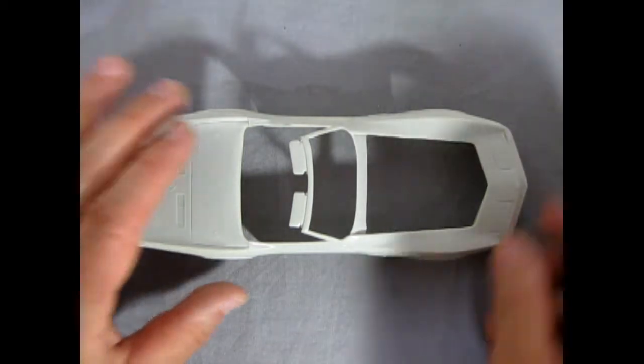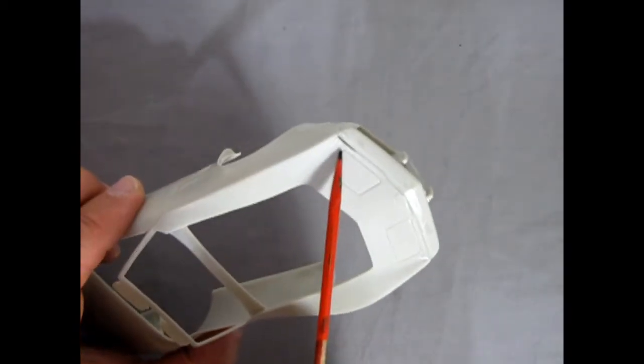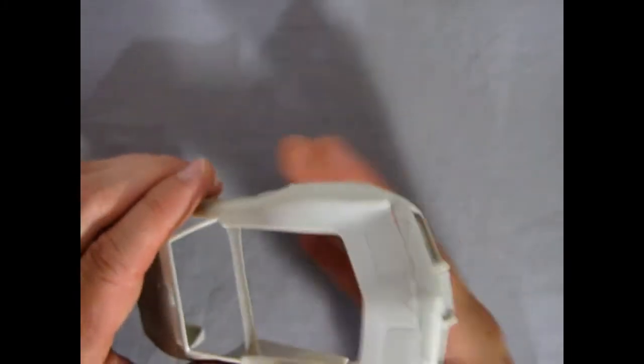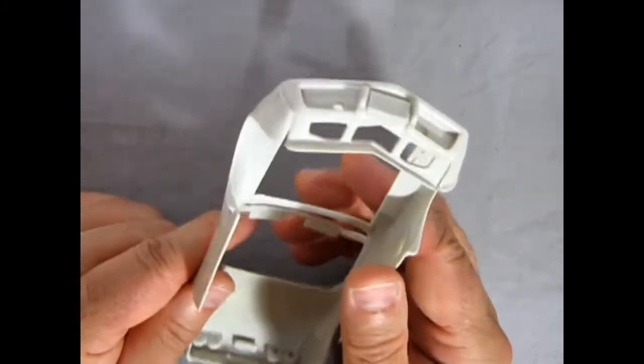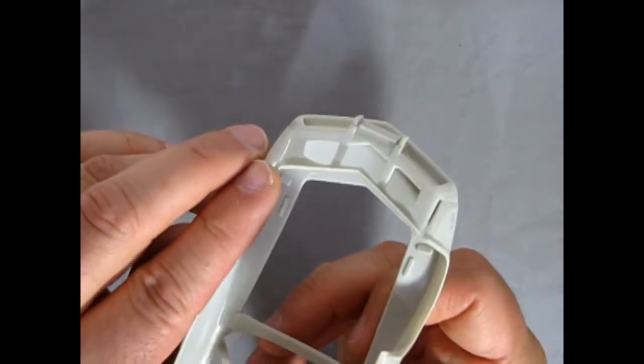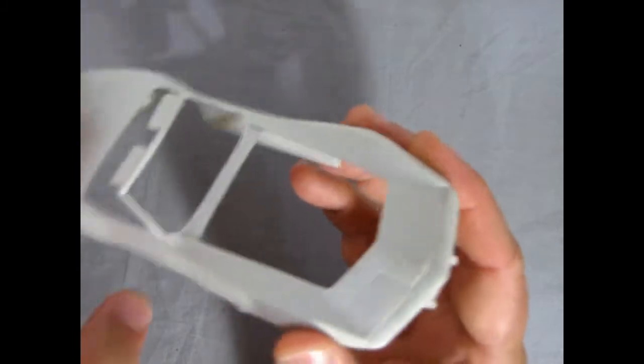Now the only downside to this model kit is that the front bumper actually does have a bit of a fit issue. As you can see here, there's quite a big gap. Now this is a model kit that I was working on earlier before I did the reviews. And as you can see, again, the front bumper does have a gap issue on it. But with a little bit of putty work, this should look really good overall.